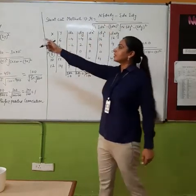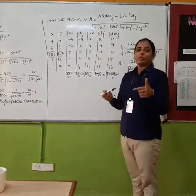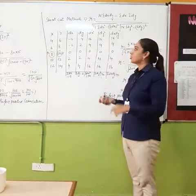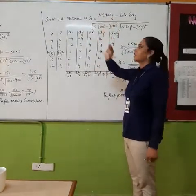You can see this is the same formula as we have done in direct method. Only what we will do, where it is x and y, x and y will add d, right, variations. So only d will be added to direct method then this will become short cut method.